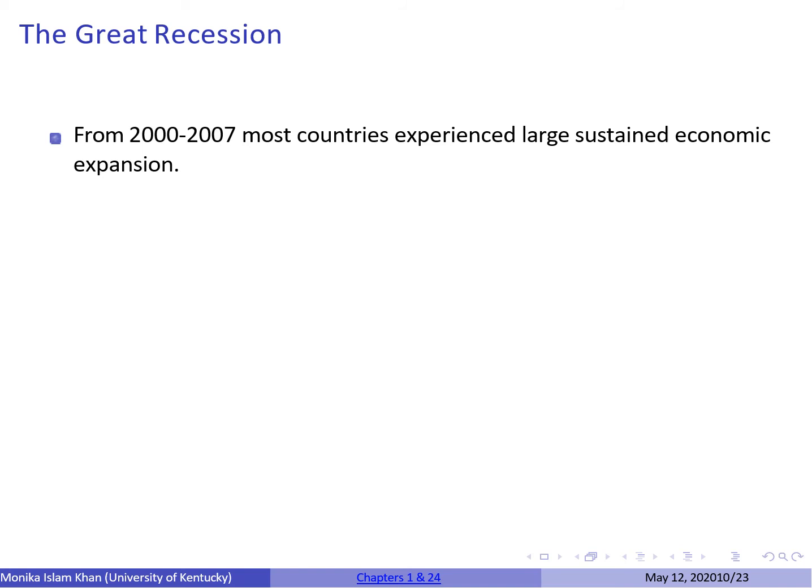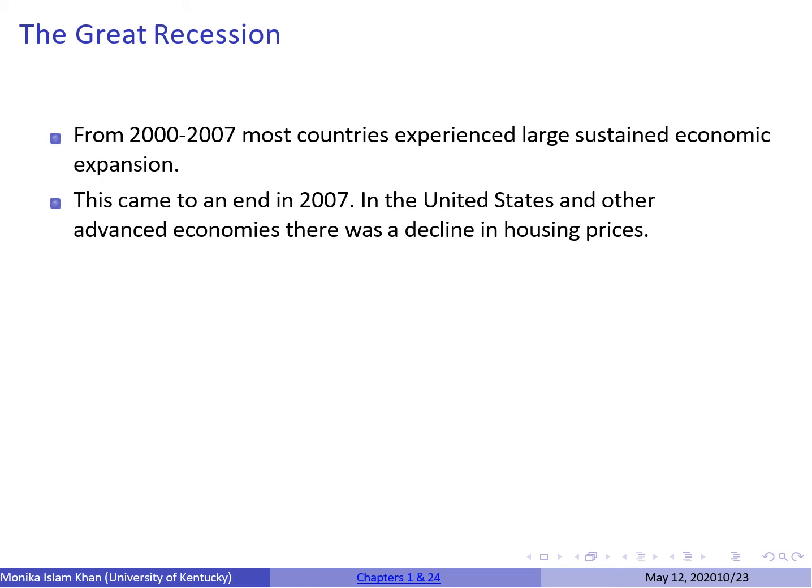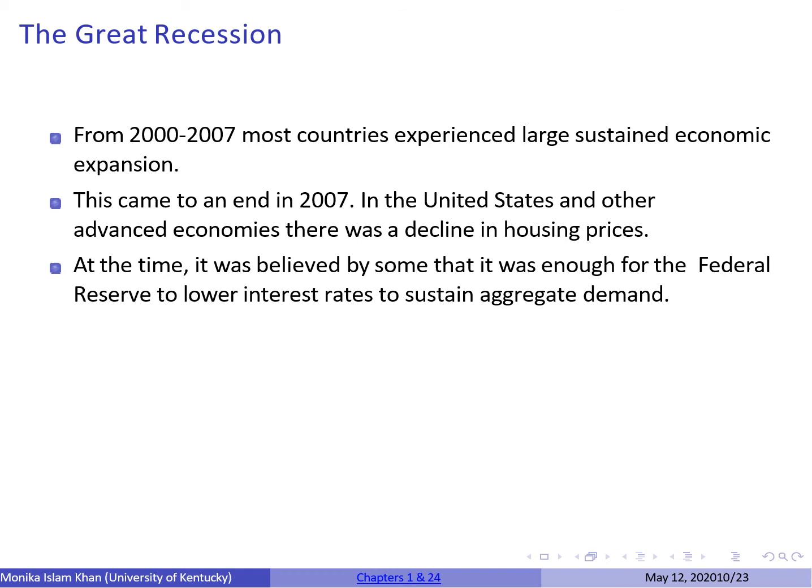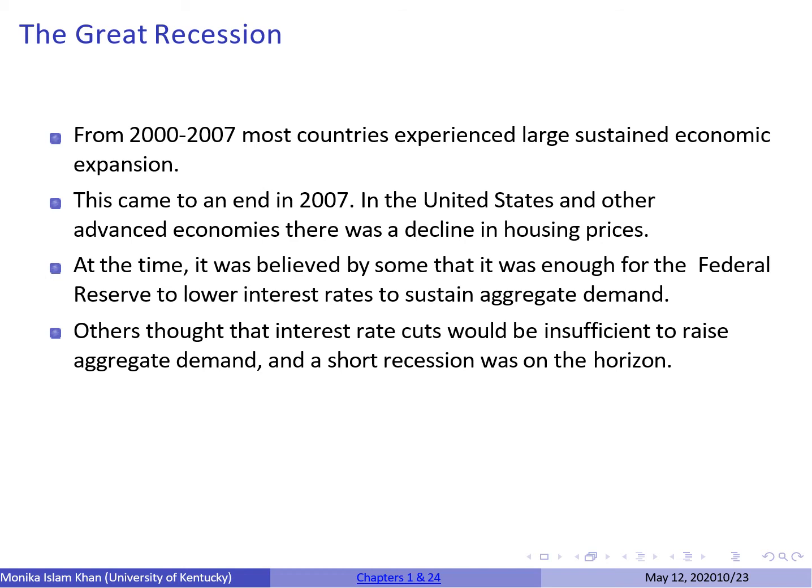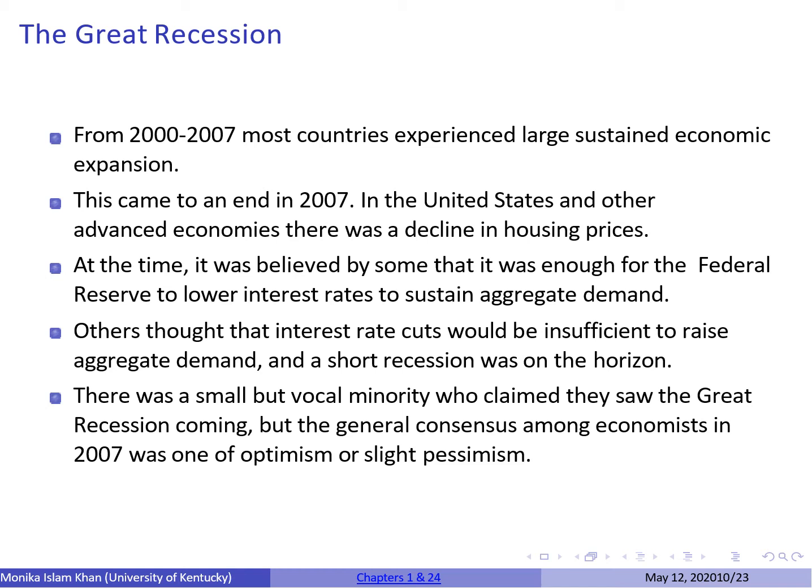So how did the great recession actually occur? From 2000 to 2007, most countries — advanced and emerging alike — experienced large sustained economic expansion. However, this expansion came to an end in 2007 when there was a major decline in housing prices in advanced economies. Many believed the Federal Reserve just needed to lower interest rates to stimulate aggregate demand, as would have been required in the Great Depression. Others thought interest rate cuts would be insufficient and expected a short recession, but with the exception of a few economists, no one really predicted the recession to be such a severe one.